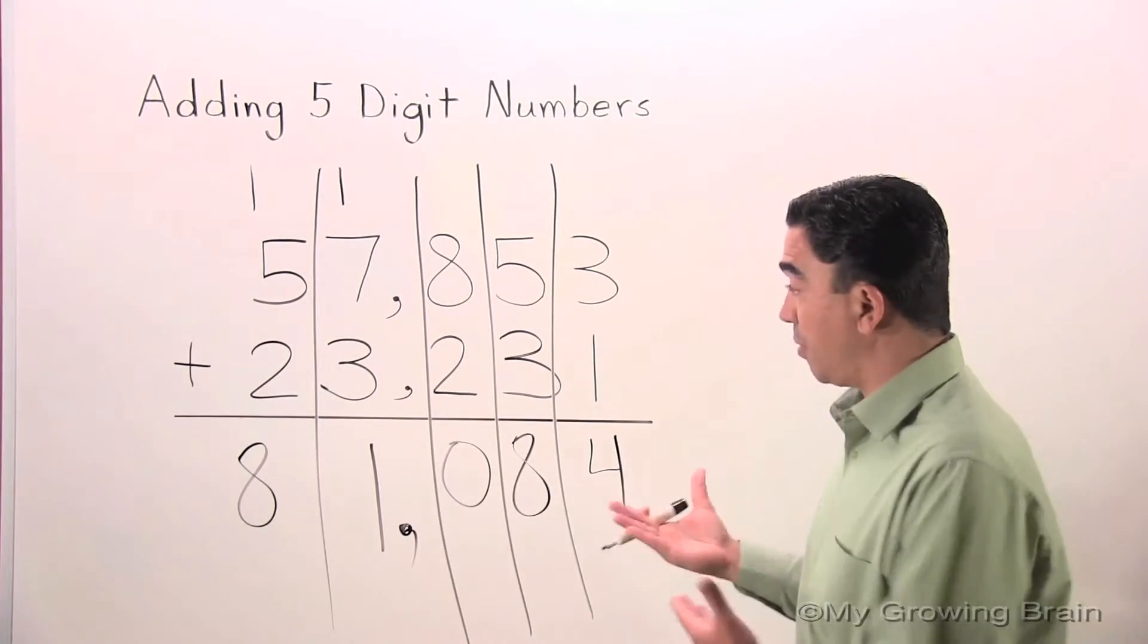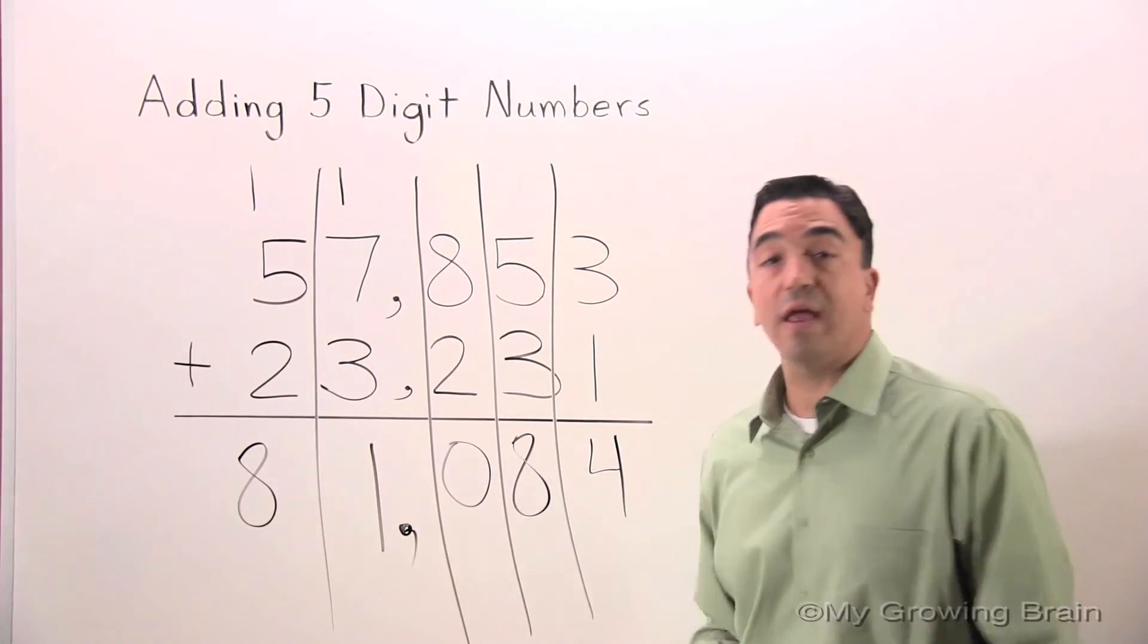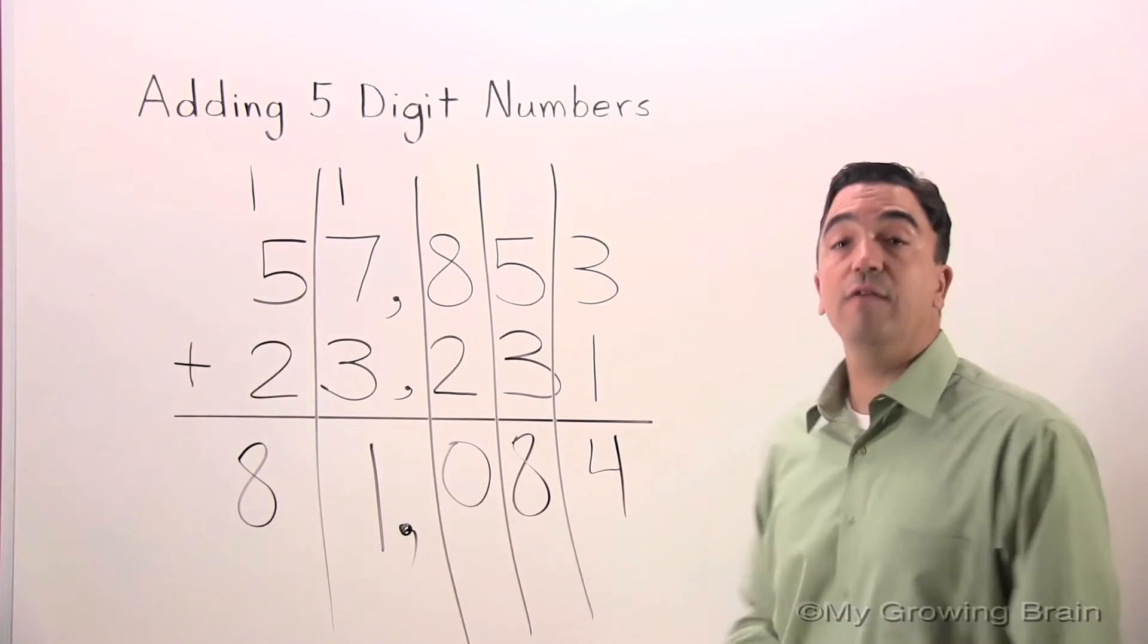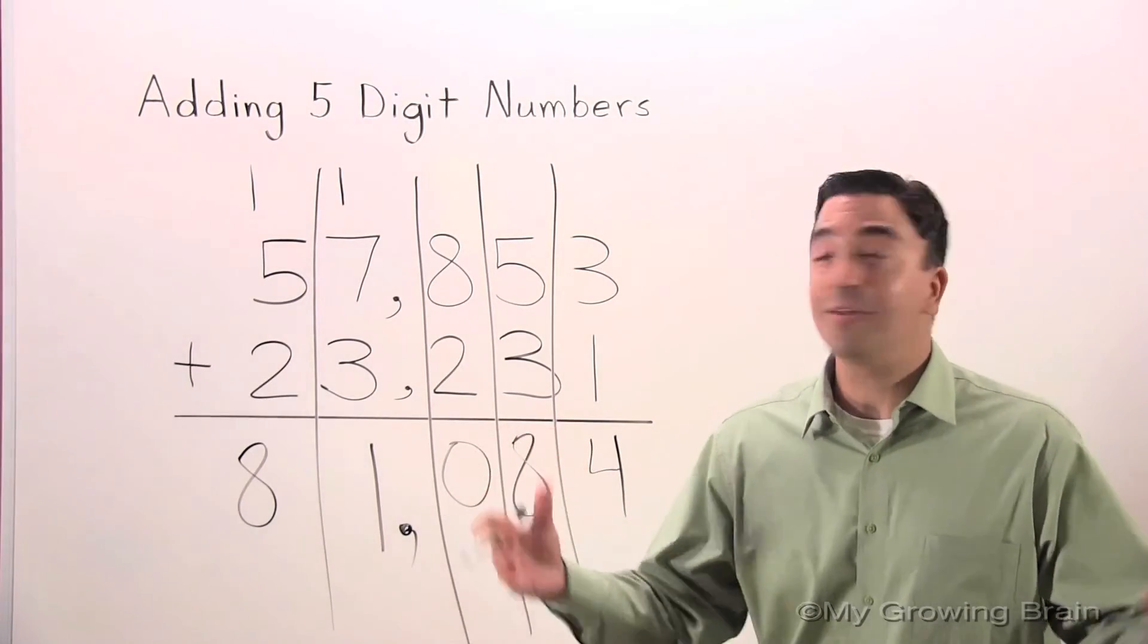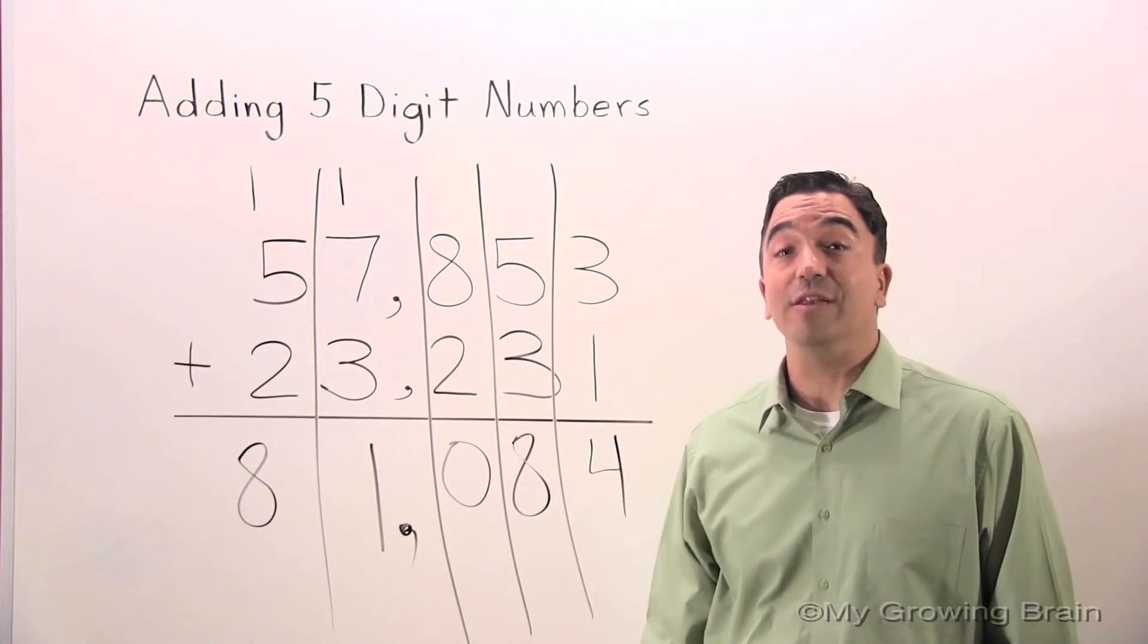The sum of our problem is 81,084. This concludes our lesson on adding five-digit numbers.